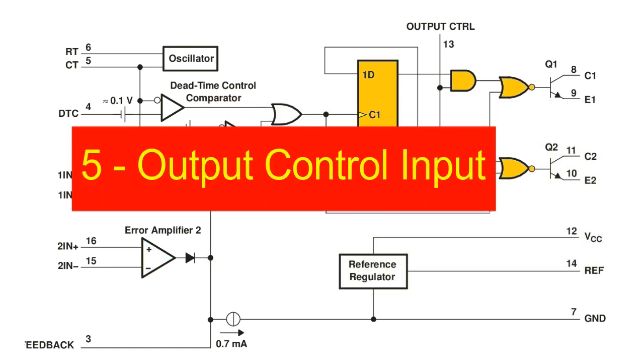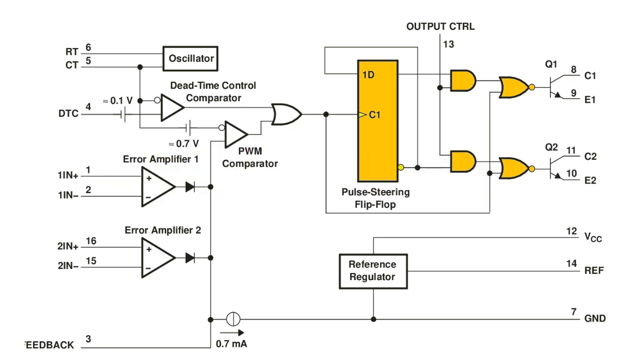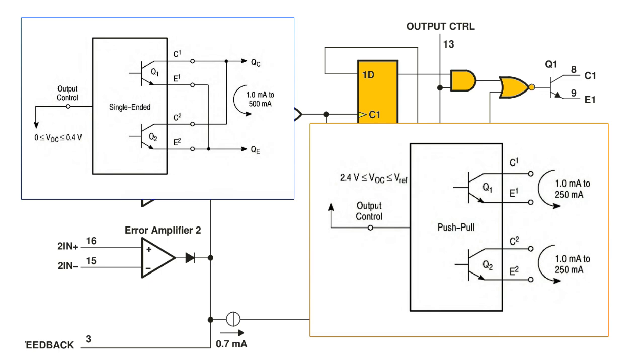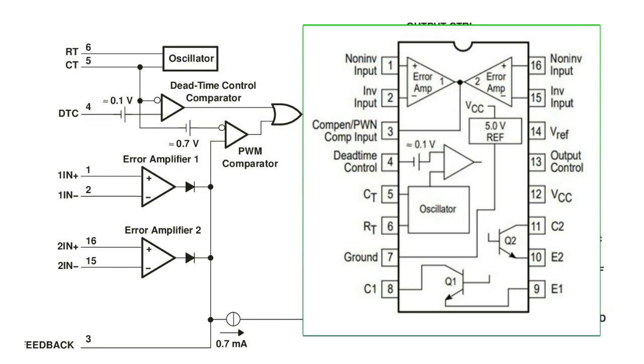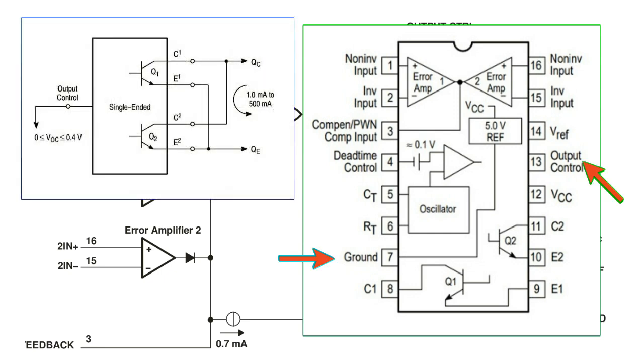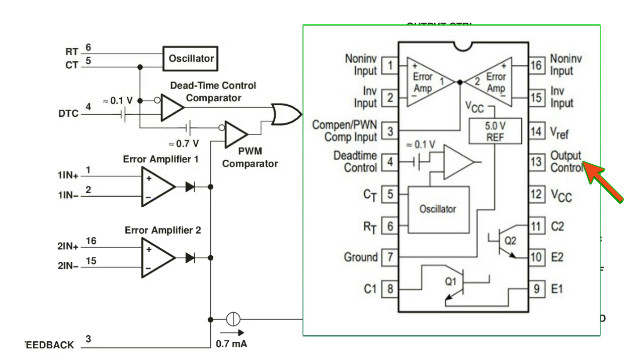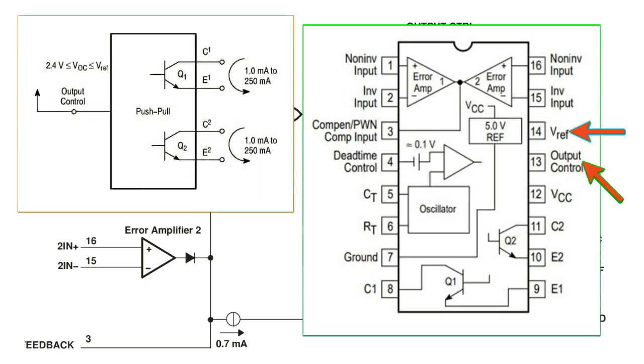Output control input: the output control input determines whether the output transistors operate in parallel or push-pull mode. By connecting the output control pin which is pin 13 to ground, sets the output transistors in parallel operation mode. But by connecting this pin to the 5V ref pin, sets the output transistors in push-pull mode.